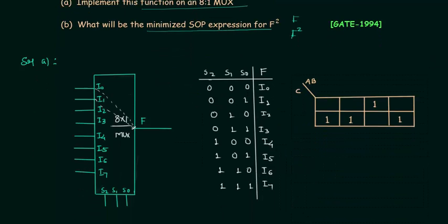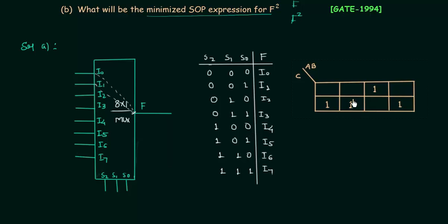We can now analyze the truth table and K-map to implement the function using 8:1 MUX. The empty cells have 0. C is 0 for the first row and C is 1 for the second row. A and B are both 0 for the first column, and so on: 0, 1, 1, 1, 1, 0.